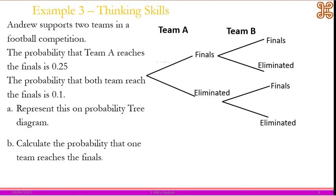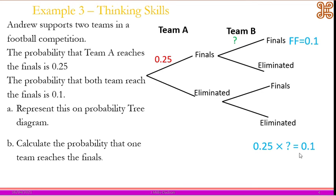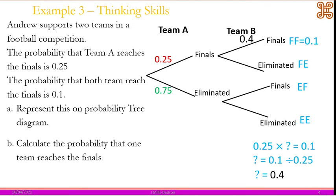Team A reaching the final is 0.25, but for team B we don't know — that's a question mark. We know that both A and B reaching the final is 0.1, which comes from team A and team B both reaching the final. So we set up a simple equation: 0.25 times the unknown equals 0.1. Dividing both sides by 0.25, we get 0.4 as the probability of team B reaching the final. Each branch adds up to one, so the complement for team A is 0.75.